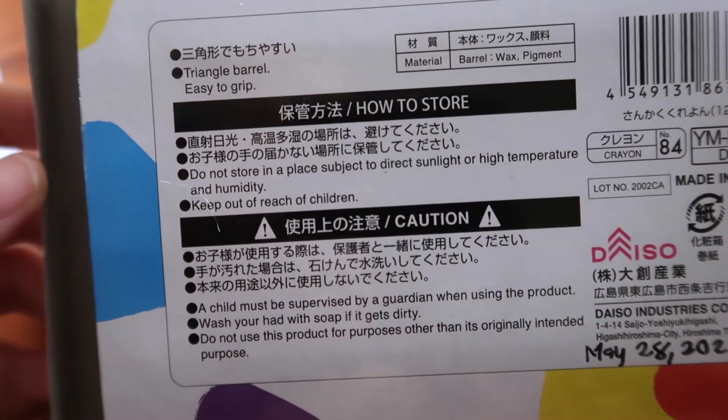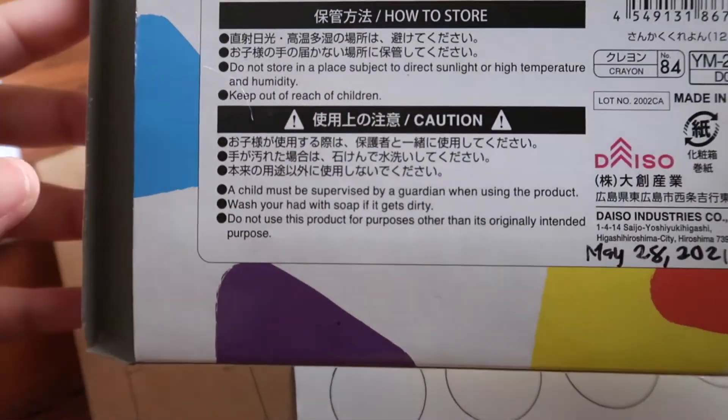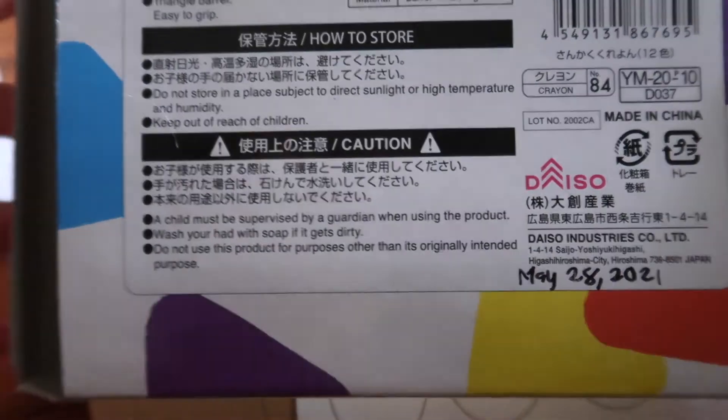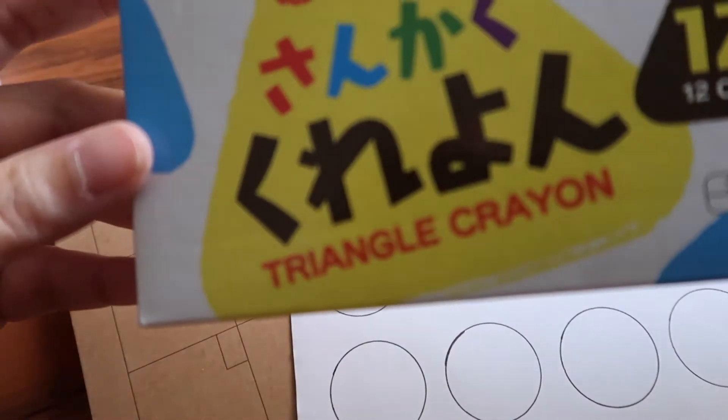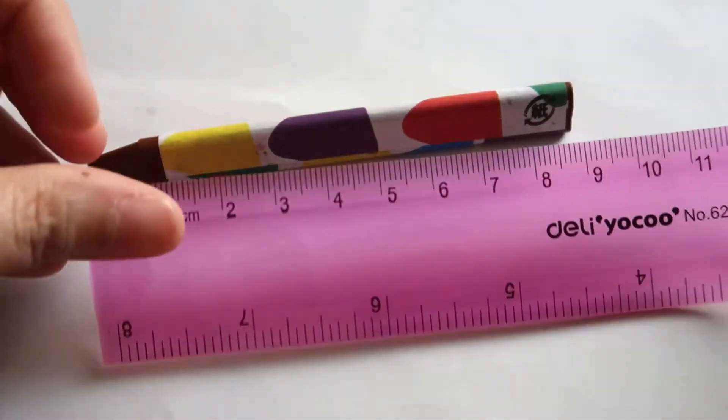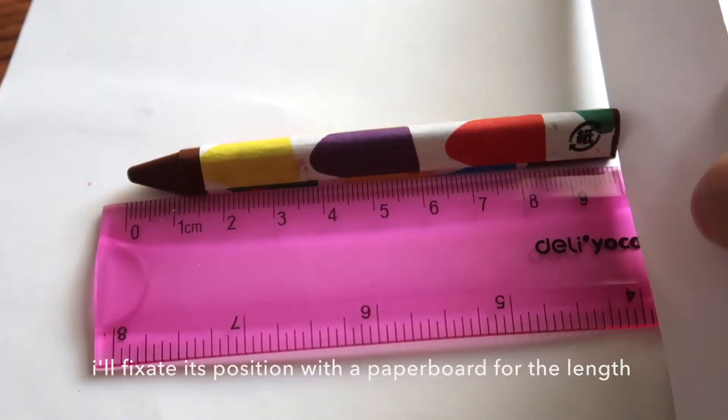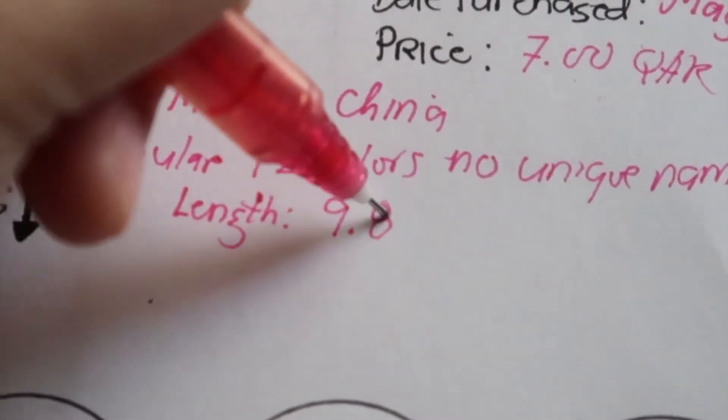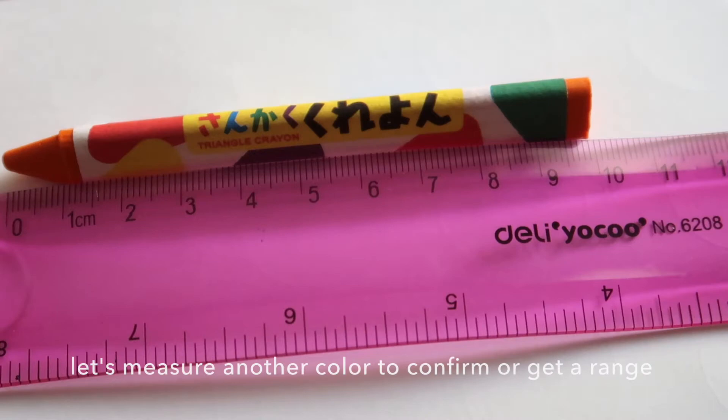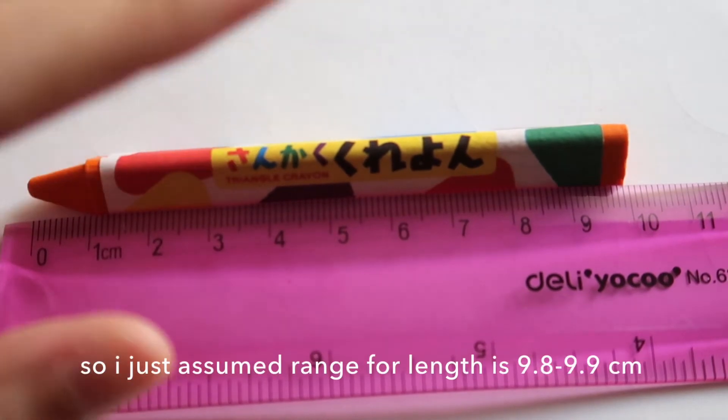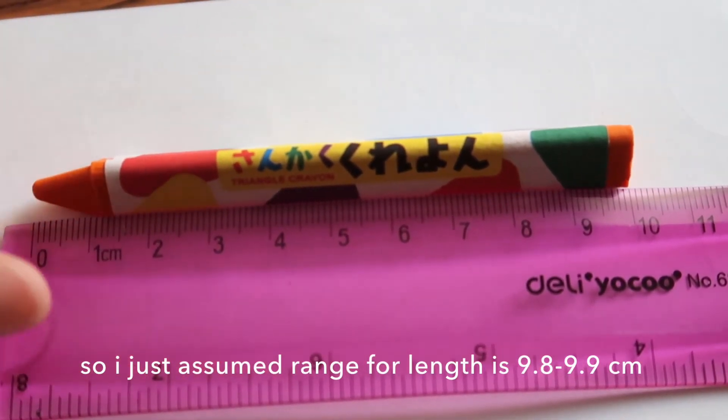But before we proceed with the other colors, let's check for the weight and the dimensions of the color. In the box, it does not state the weight of the colors for each, so let's see how much it weighs. This is 9.9 cm, so it's between 9.8 to 9.9 perhaps.